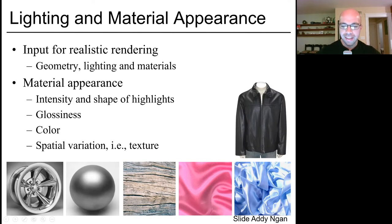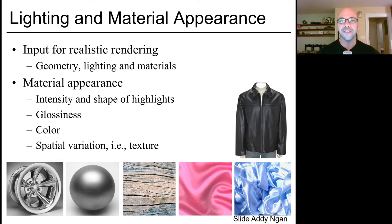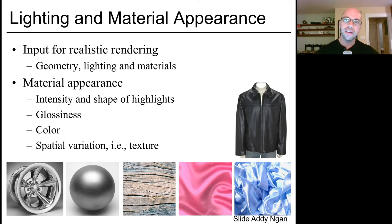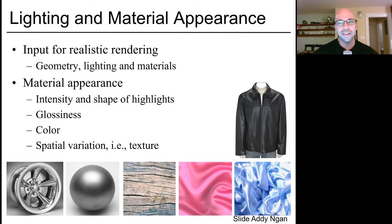Lighting and material appearance are really critical factors for the realism of a rendered image. Typically, when we render an object, we don't just have its geometry — like its normal vectors, where it is in space, and so on — but we'll also attach to that object at least one and oftentimes many different textures, which are the necessary input for realistic rendering. So when we render, we input not just the geometry in the scene, but also the positions of the lights — like point lights and area lights — as well as the material of every object we're going to render.